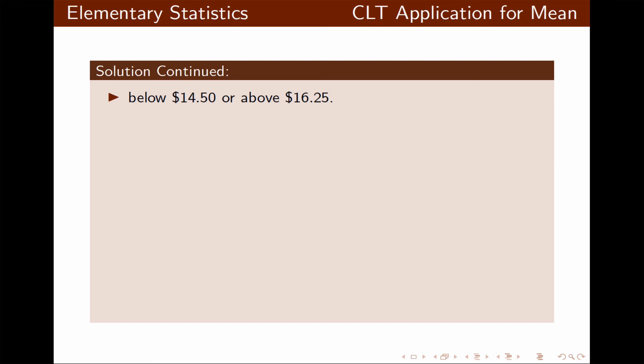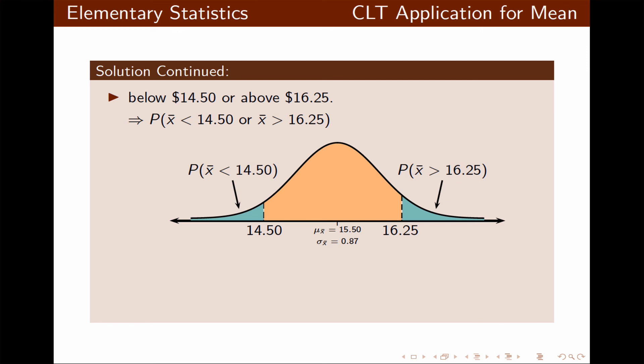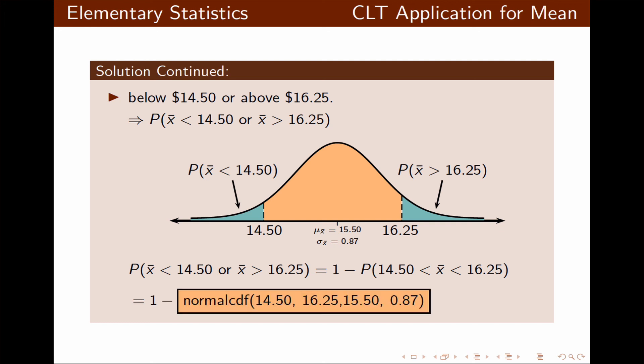Finally, we want the probability the mean is below $14.50 or above $16.25. Instead of calculating each tail separately, it is more practical to find the area between the two values and subtract from the total probability of 1. The final answer is 0.320, which is 32%. I hope this presentation helped you understand how to apply the central limit theorem for means in real applications.